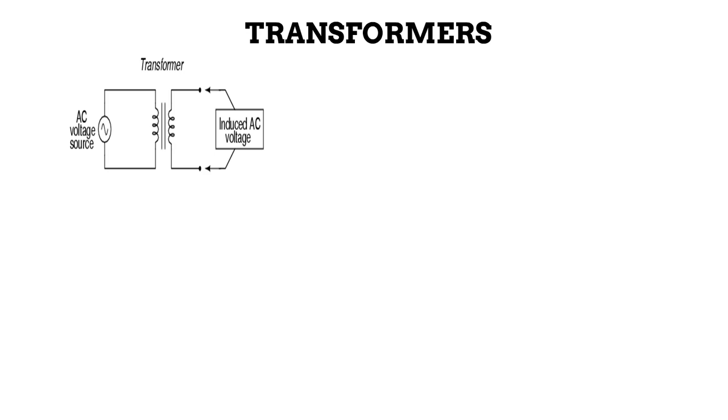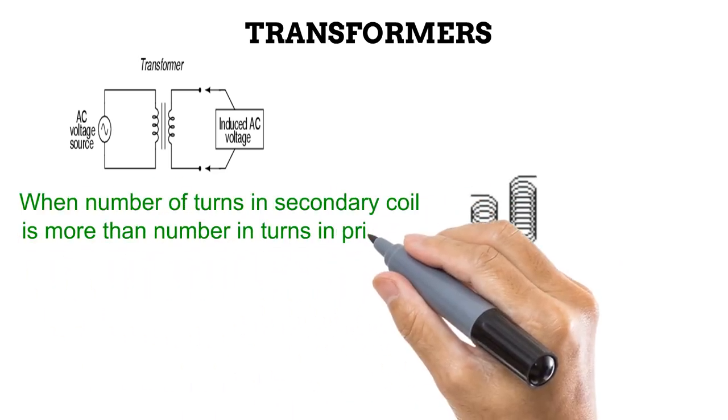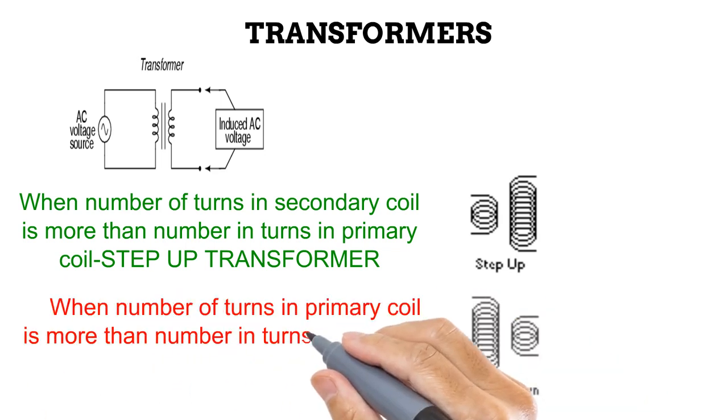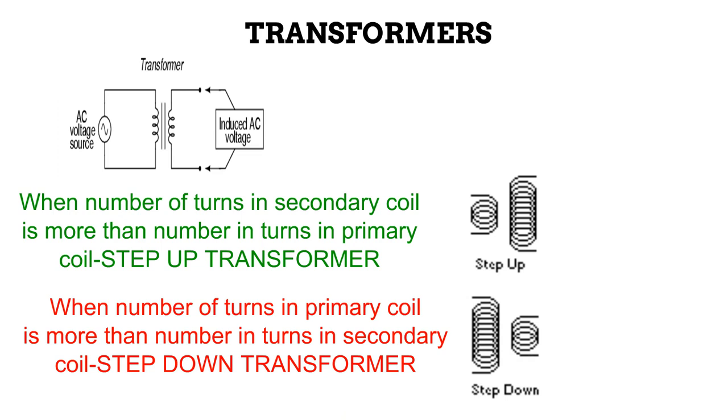There are two popular configurations of a transformer. First is the step-up transformer. In this, the number of turns in the secondary coil is more than the number of turns in the primary coil. The second is the step-down transformer. And like you may have guessed, this is the opposite. The number of turns in the primary coil is more than the number in the secondary coil.